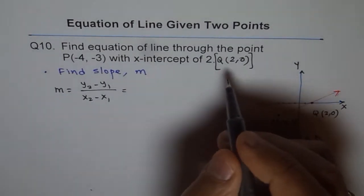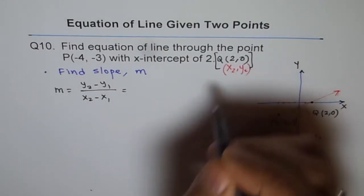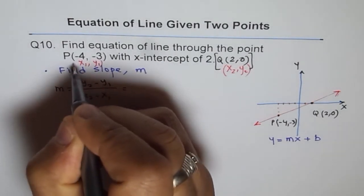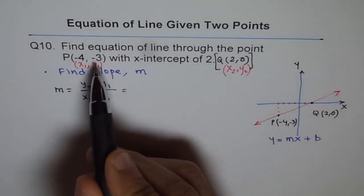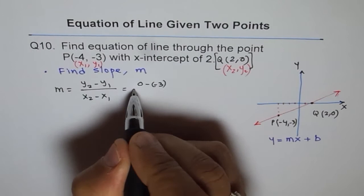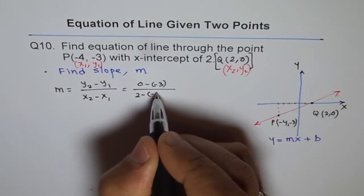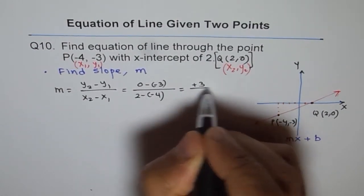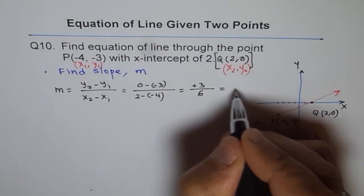Now the difference between y's is 0 minus (-3). So let's write 0 minus (-3) divided by 2 minus (-4). 2 minus (-4), which gives us minus minus plus 3 over 2 plus 4, which is 6. And that is half. 1 over 2 is the slope.